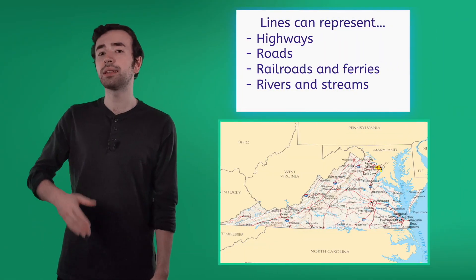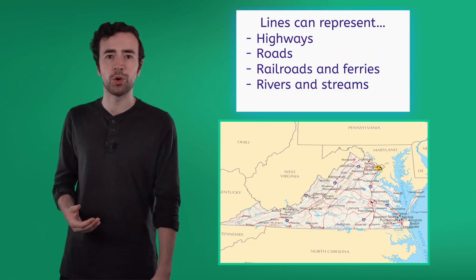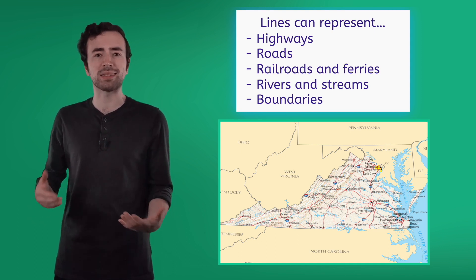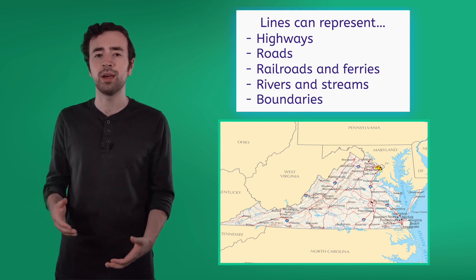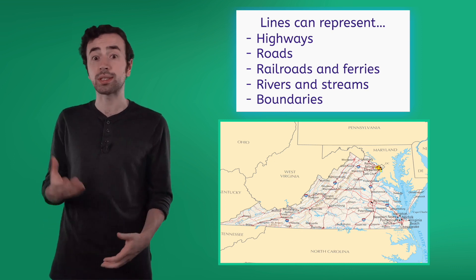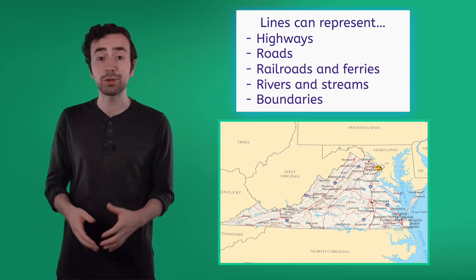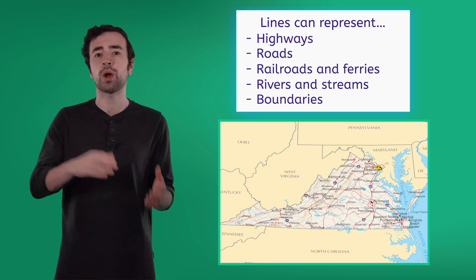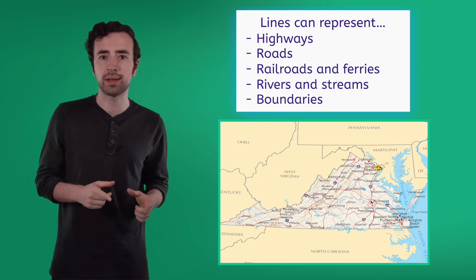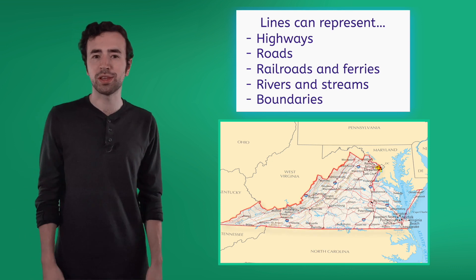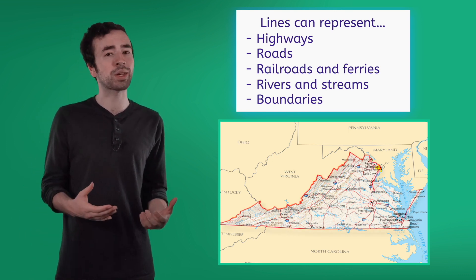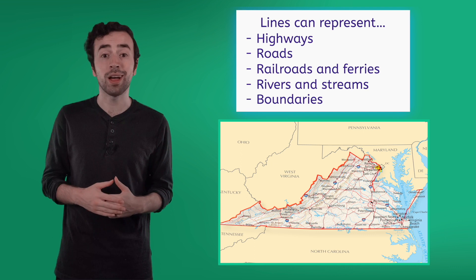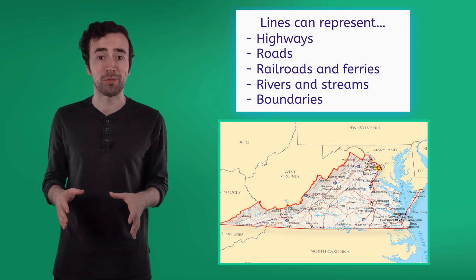And finally, lines also represent boundaries. A boundary is an imaginary line that separates places from each other, like countries from other countries or states from other states. Boundaries aren't things we can actually see in real life. They exist on maps to show us where one place ends and the other begins. See here on our map of Virginia? We can see the boundaries where it meets up with the states around it. Lines are really a major part of maps, aren't they?